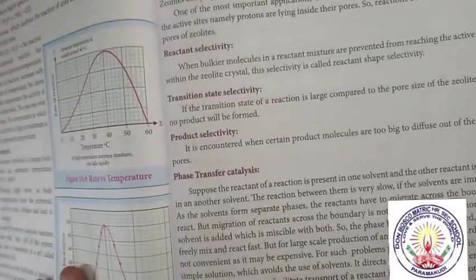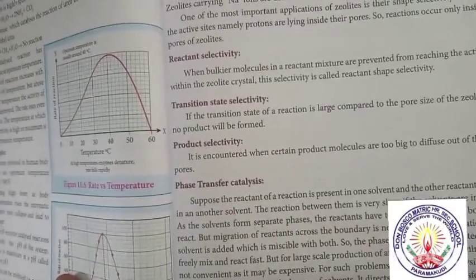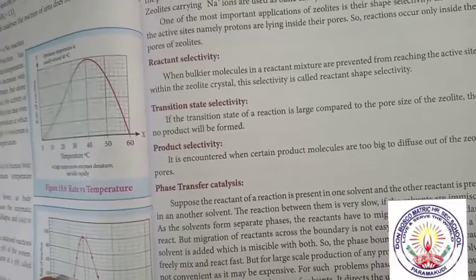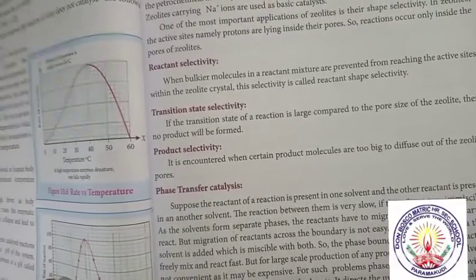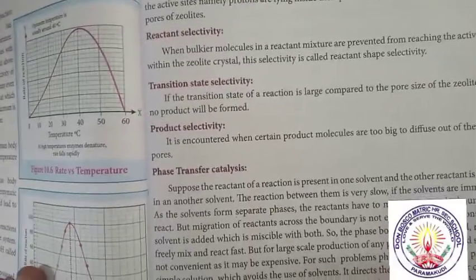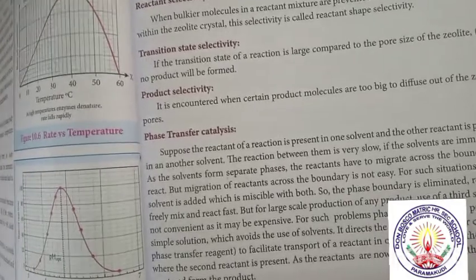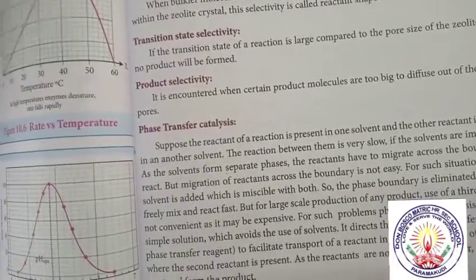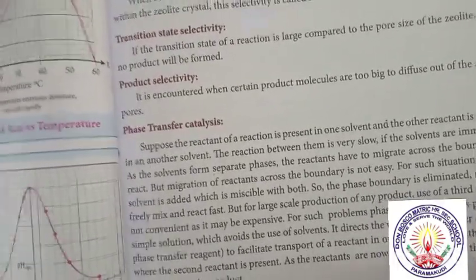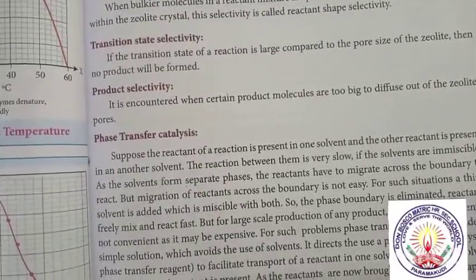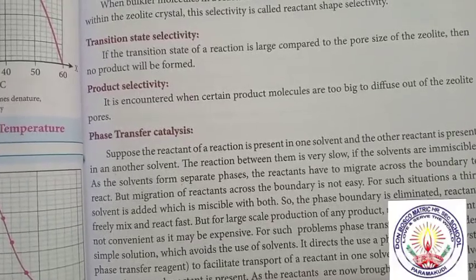Product selectivity: it is encountered when certain product molecules are too big to diffuse out of the zeolite pores. Phase transfer catalysis: suppose the reactant of a reaction is present in one solvent and the other reactant is present in another solvent — the reaction between them is very slow.